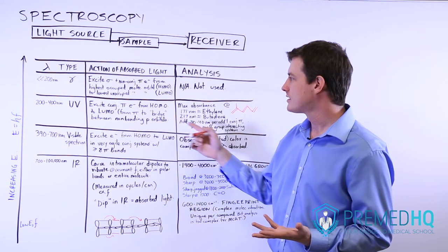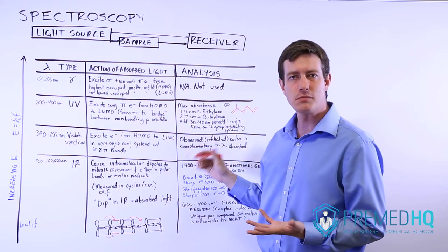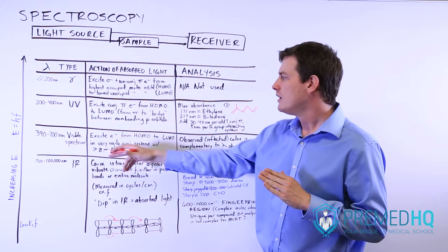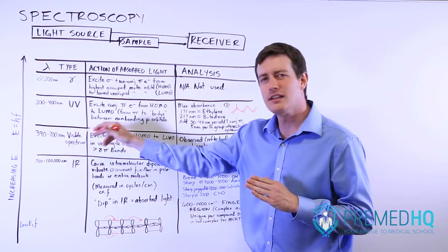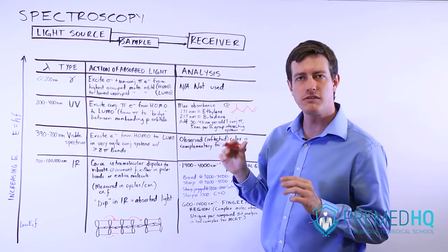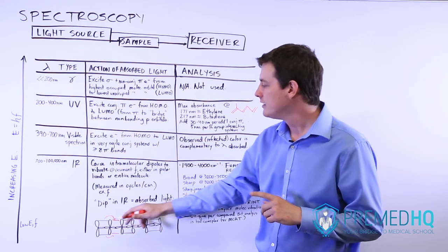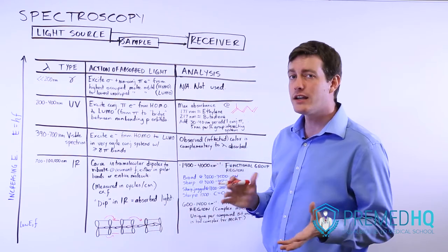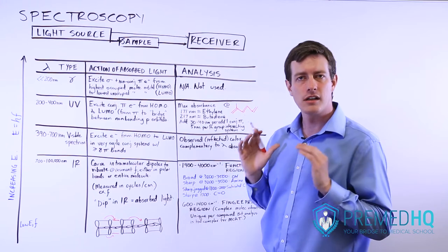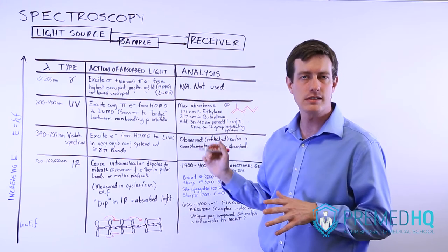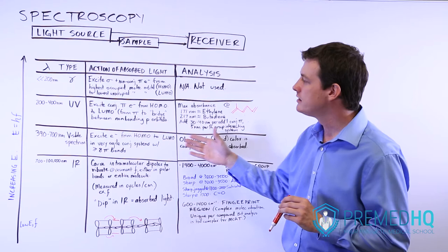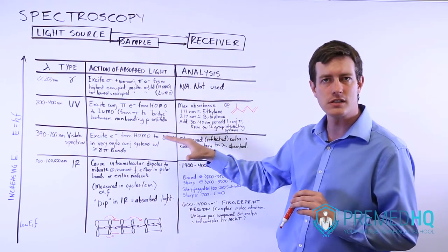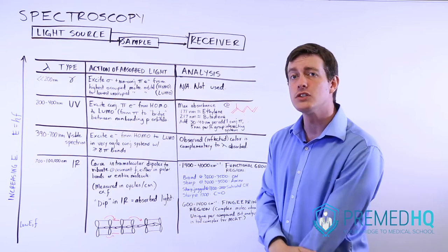The way visible spectroscopy works is similar to how ultraviolet spectroscopy works. You have a very large conjugated system, and so fairly low energy light is now capable of finding an electron that it can excite into its lowest unoccupied molecular orbital. Beta-carotene has 11 conjugated pi bonds in its system, and so that gets you into the visible light range somewhere in the high 400s to low 500 nanometer range.